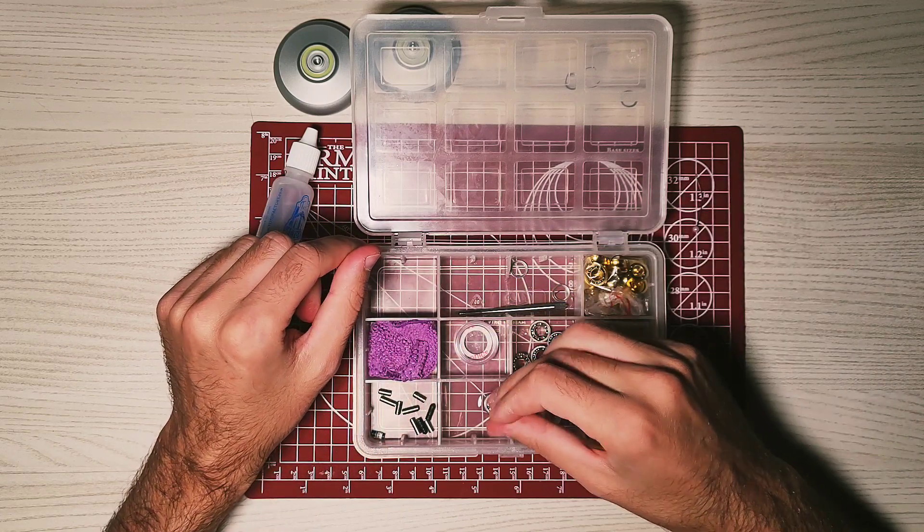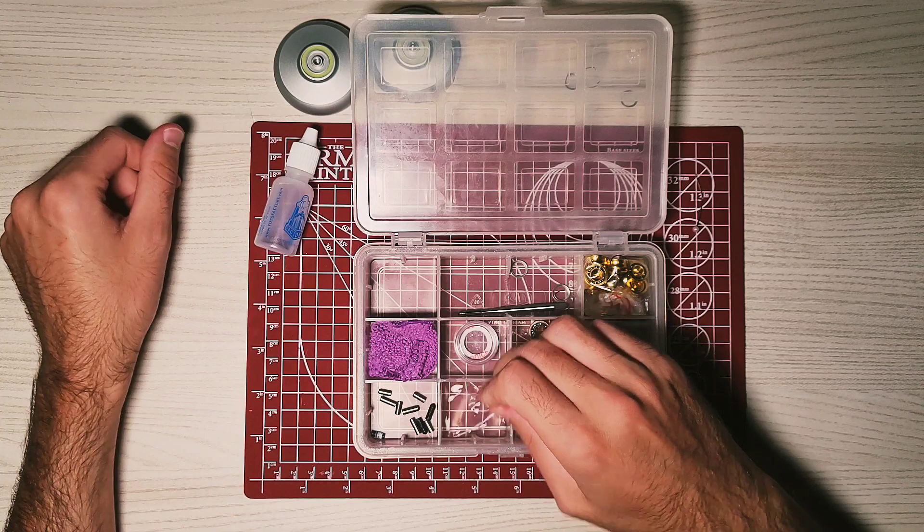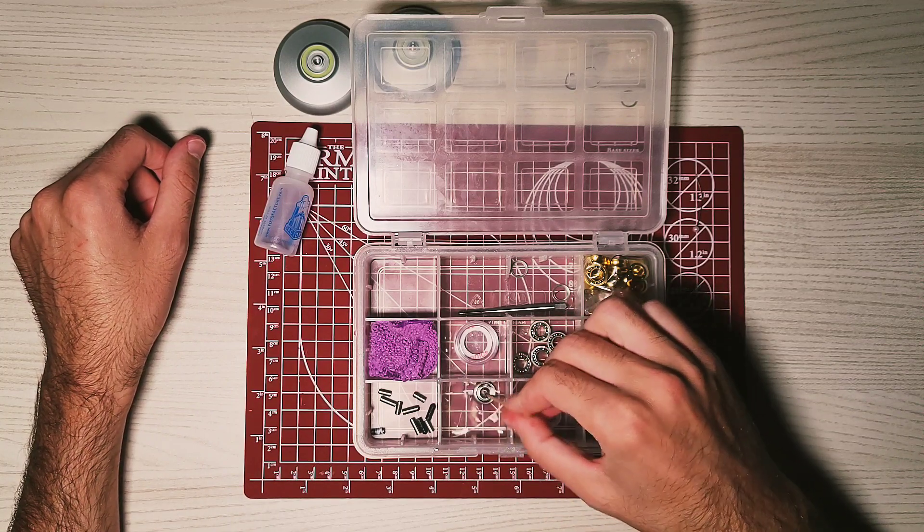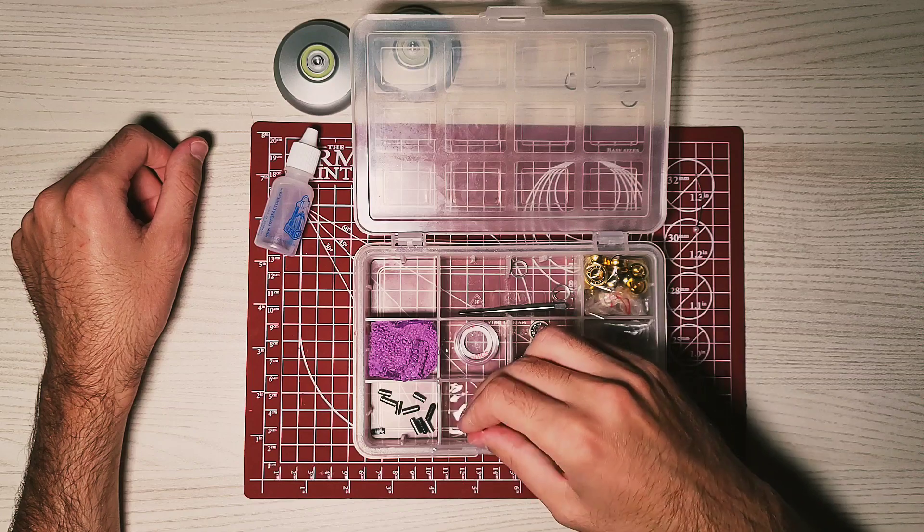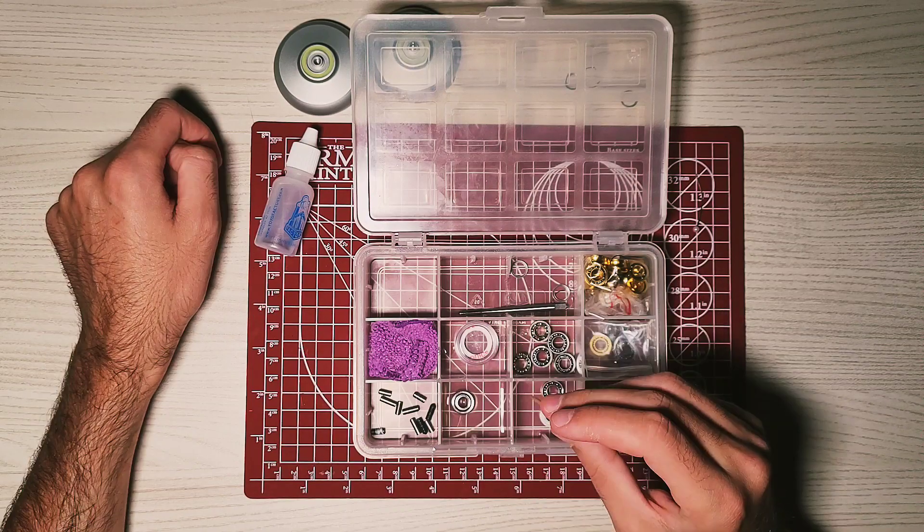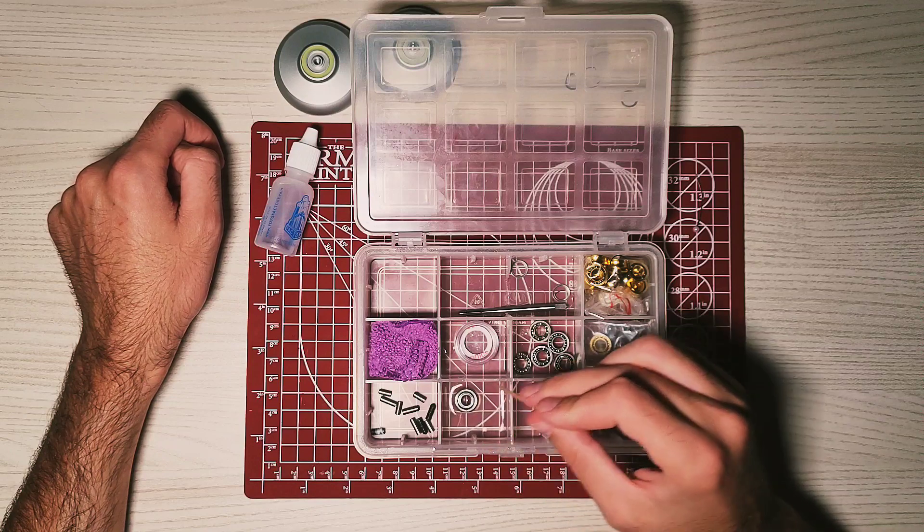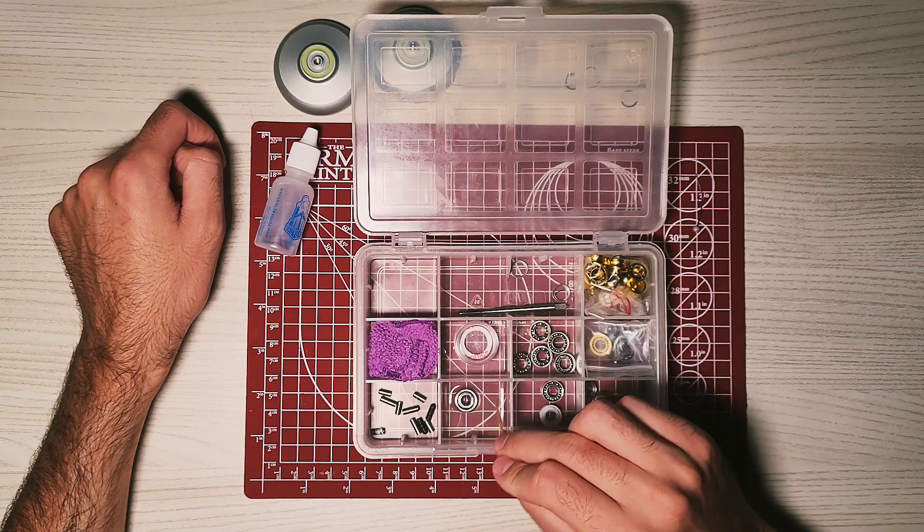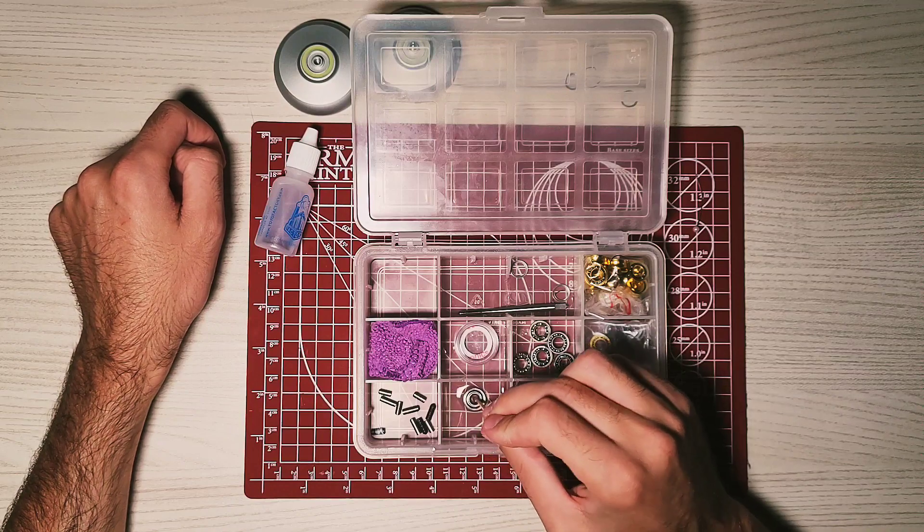With the needle or a toothpick, you can start and ramble the bearing around into the alcohol. I can see some dirty particles floating around the alcohol right now.